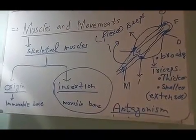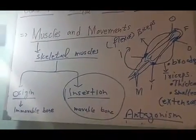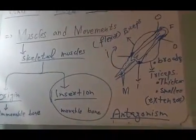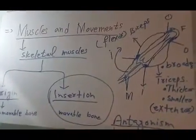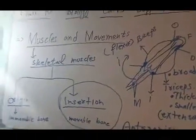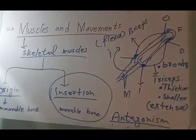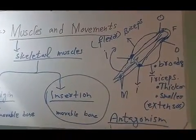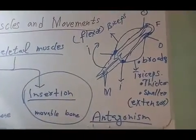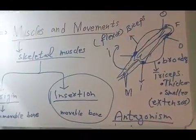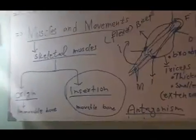Biceps and triceps are antagonistic muscles — they are antagonists because they work opposite to each other. Other flexor and extensor muscles in our body, like biceps and triceps, are also antagonists. They work in antagonistic pairs, and this phenomenon is called antagonism — the contraction of one muscle while the other in the pair simultaneously relaxes.